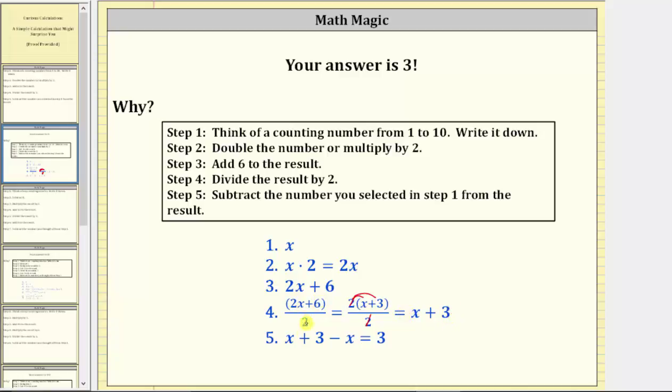The quantity two x plus six divided by two equals x plus three. And then step five was to subtract the number from step one, which in our case is represented by the variable x.